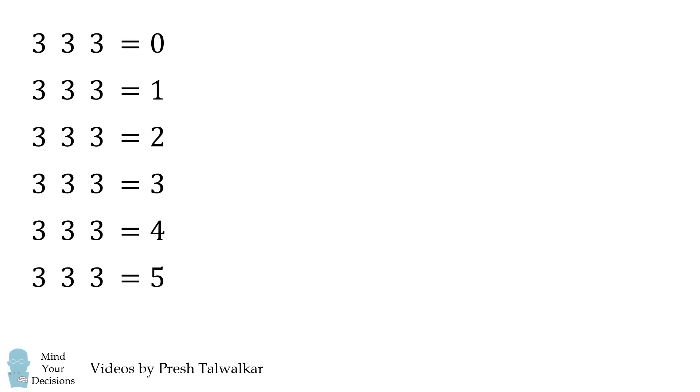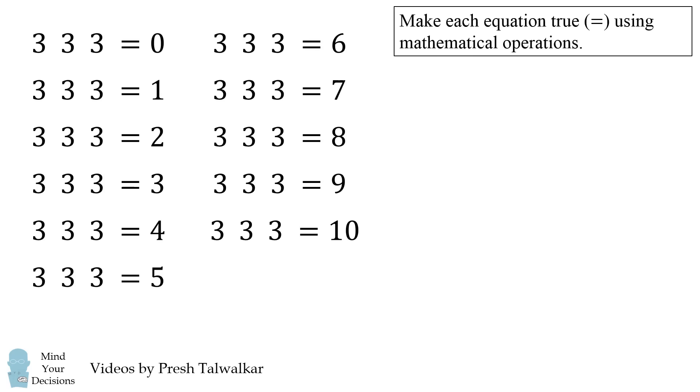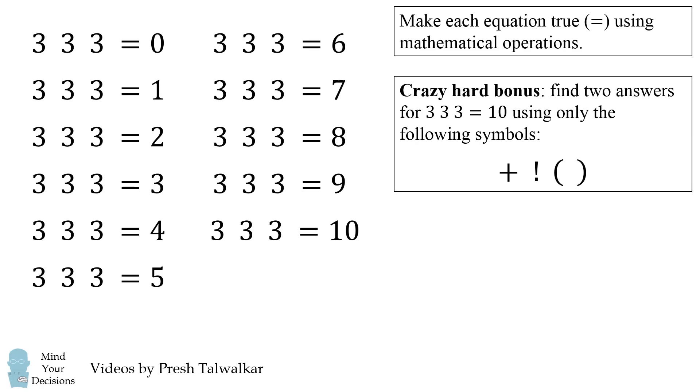The challenge is to make each number from 0 to 10 using three 3's. In other words, make each equation true with equality using mathematical operations. There are many ways to do this, and here's a crazy hard bonus question. Find two answers for 3 3 3 equals 10 using only the following symbols: plus, exclamation point, and parentheses.